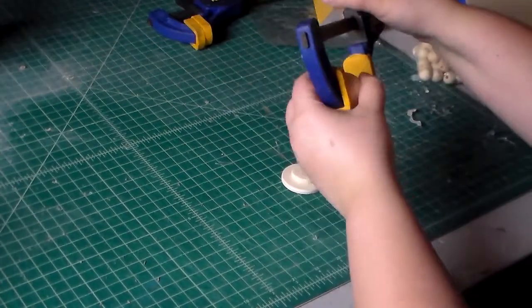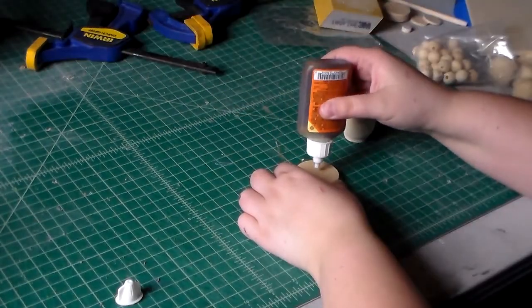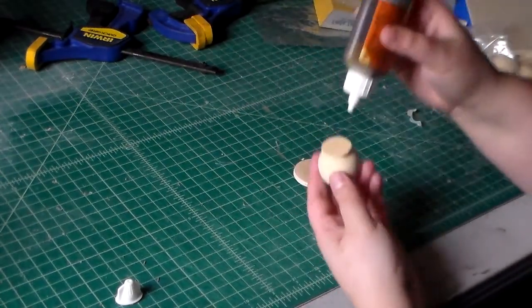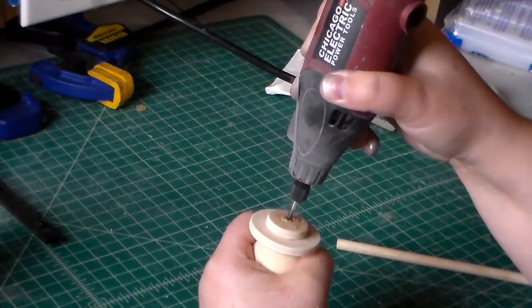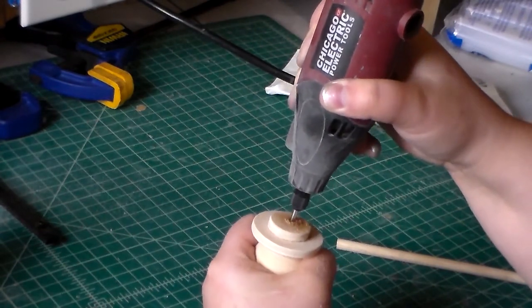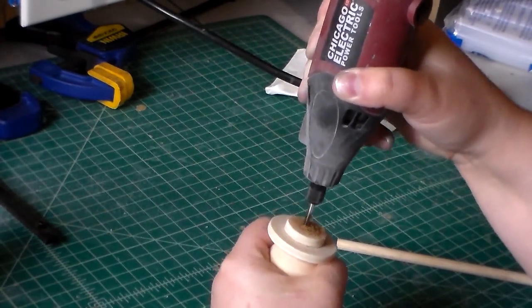Now we're going to glue all the parts together. The 1.5 inch disc is going to be glued so it's sandwiched between the 1 inch discs on either side. When that dries, take a dremel or rotary tool and burrow out a small hole in the bottom of the ornament to stick the wider end of the dowel into.